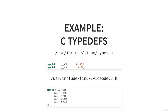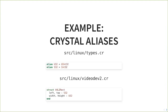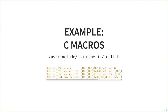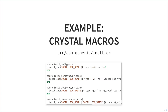Here's an example of C typedefs from v4l2, aliasing s32 and u32 typedefs, and the same typedefs converted to Crystal — all names preserved, just the syntax changed slightly. And here are some C macros for defining ioctl codes with bitwise operations, converted to Crystal — all names and logic preserved, along with the file name structure, so a C programmer can quickly understand where those things came from.